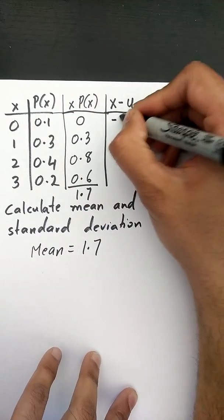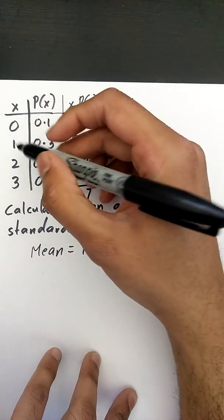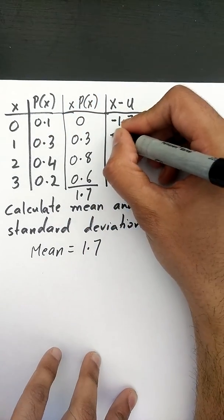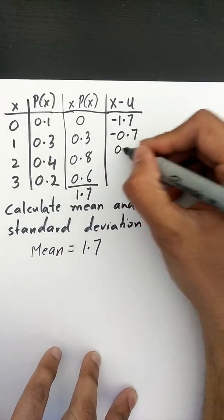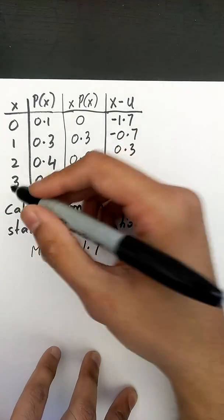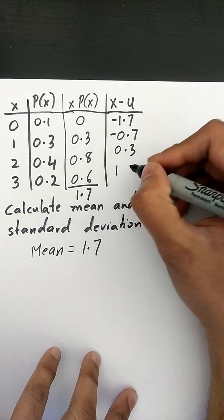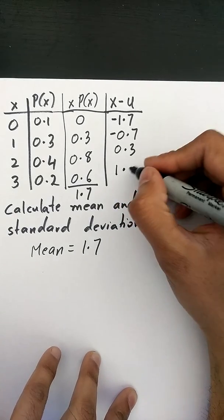So 0 minus 1.7 is negative 1.7, 1 minus 1.7 is negative 0.7, 2 minus 1.7 is 0.3, and 3 minus 1.7 is 1.3.